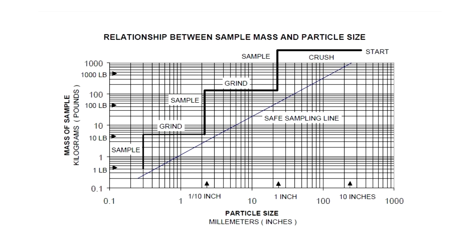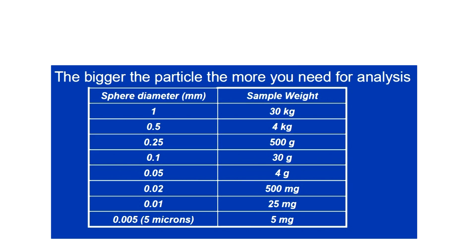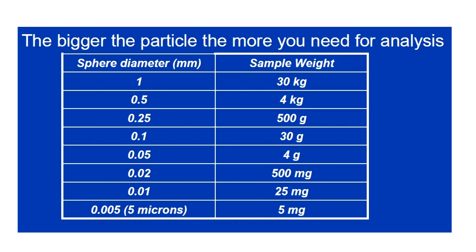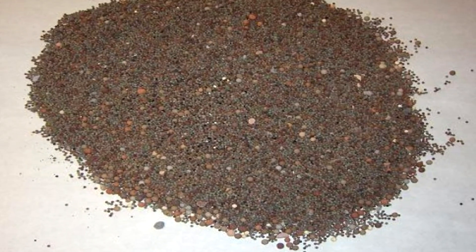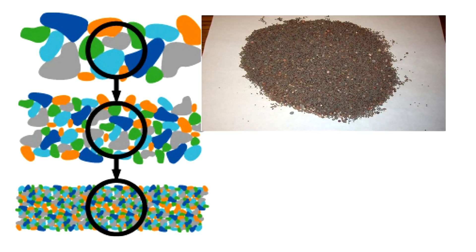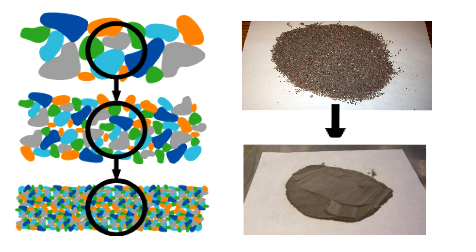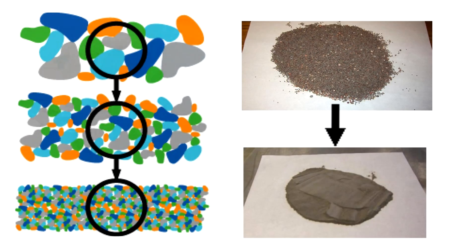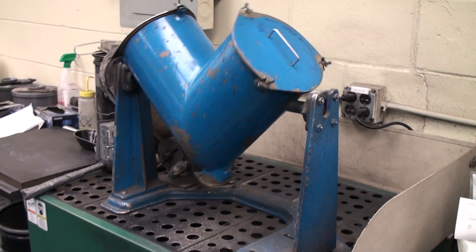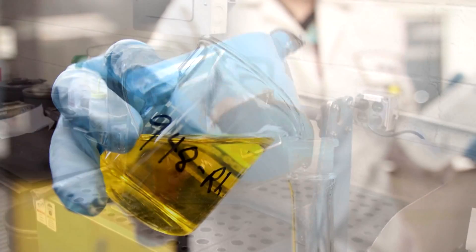Larger sample sizes are required with larger particle size distributions of the bulk. Therefore, it is of great value to crush and grind the sample to allow for taking smaller, reliable samples. The sample is then mixed thoroughly to obtain a mixture that is homogenized.